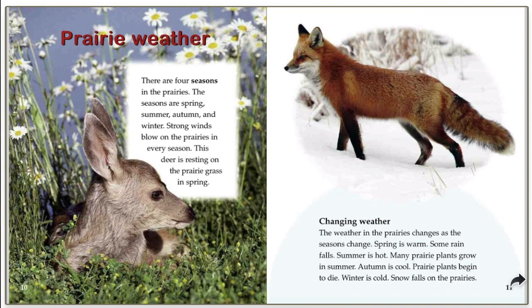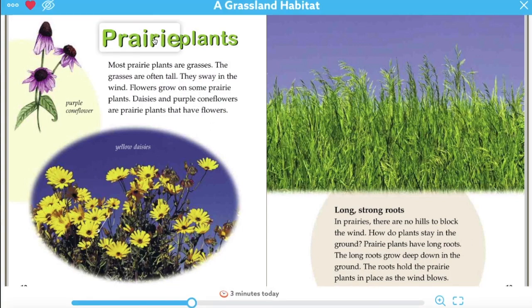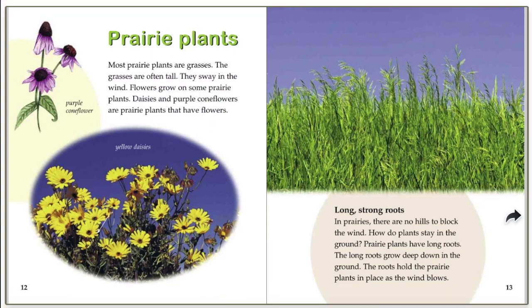This part is about our seasons, not necessarily about our plants, so I'm going to flip forward to our plant section. I know that it's our plant section because the header says prairie plants. Most prairie plants are grasses. The grasses are often tall. They sway in the wind. Flowers grow on some prairie plants. Daisies and purple coneflowers are prairie plants that have flowers.